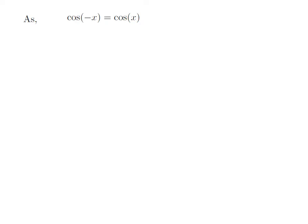As we know, the trigonometry identity cosine of minus x is equal to cosine of x.